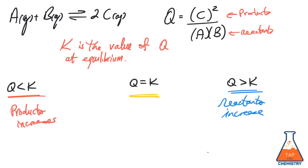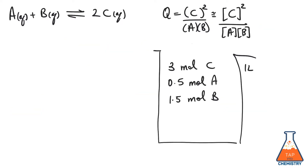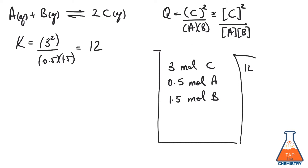Let's return to the example that we started previously and see what happens when we reach equilibrium. At some point, the amounts of products and reactants in our example have stopped changing, and we write the value of K in terms of the activities of the products over the activities of the reactants, and we get a value of 12.